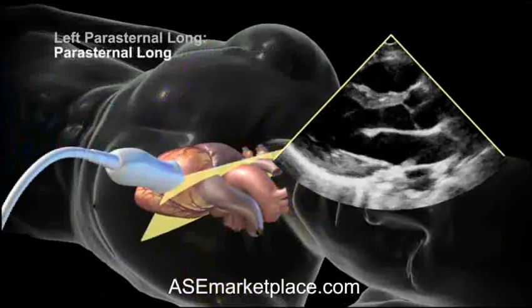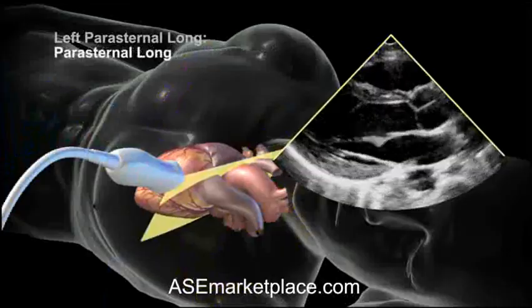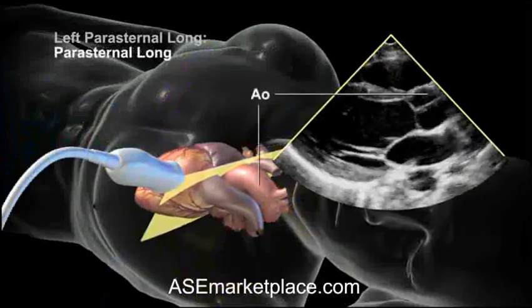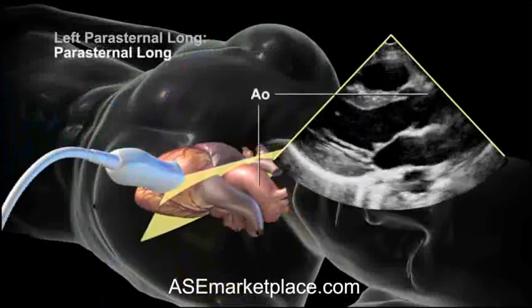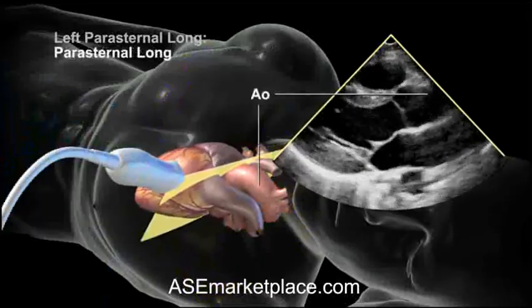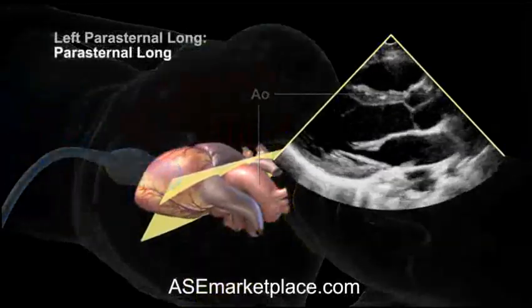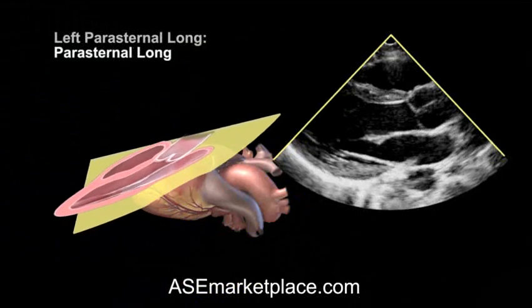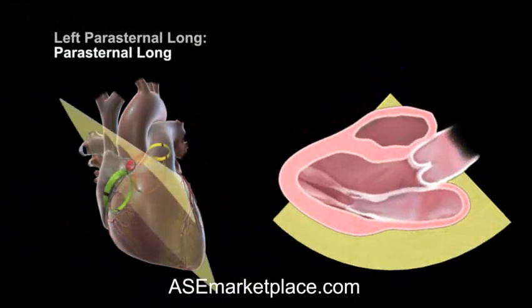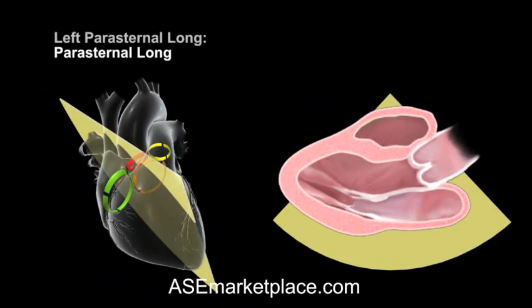Now we will look at each view to demonstrate the anatomic structures visualized. Notice that in this parasternal long axis view, the aorta is labeled in both the animated heart and the clinical image. On the left image, we can see how the parasternal long plane cuts the aortic valve, labeled AOV, and the mitral valve, labeled MV.